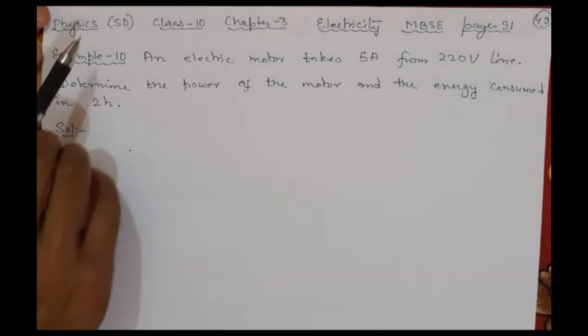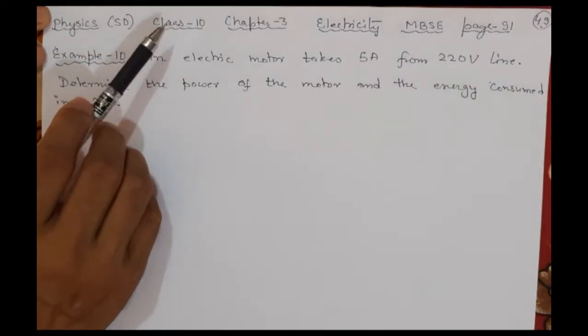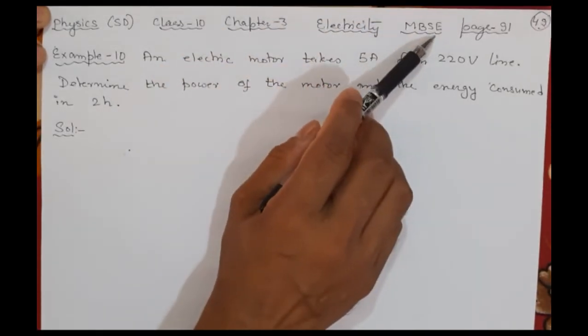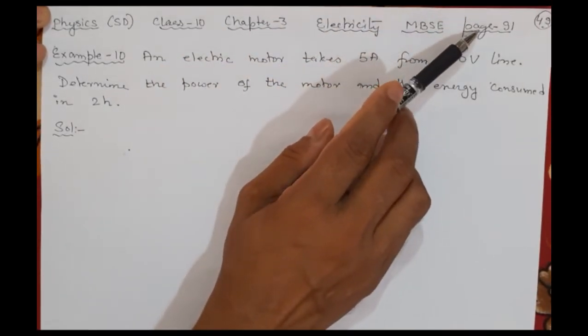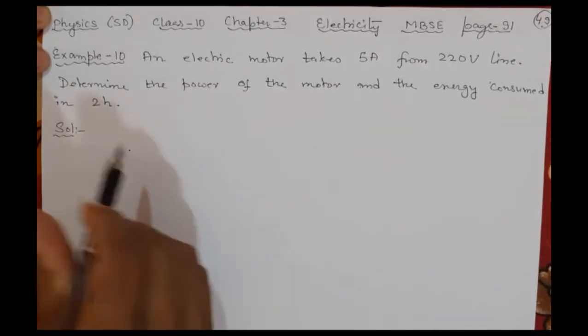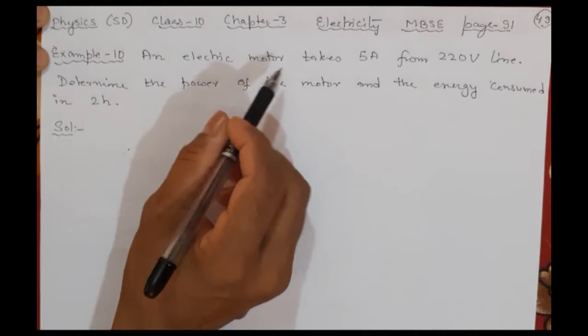Welcome back to SD Online Classes. This is Physics Class 10, Chapter 3: Electricity, Mizoram Board of School Education syllabus. Base number is 91, and the question is Example 10. An electric motor takes 5...